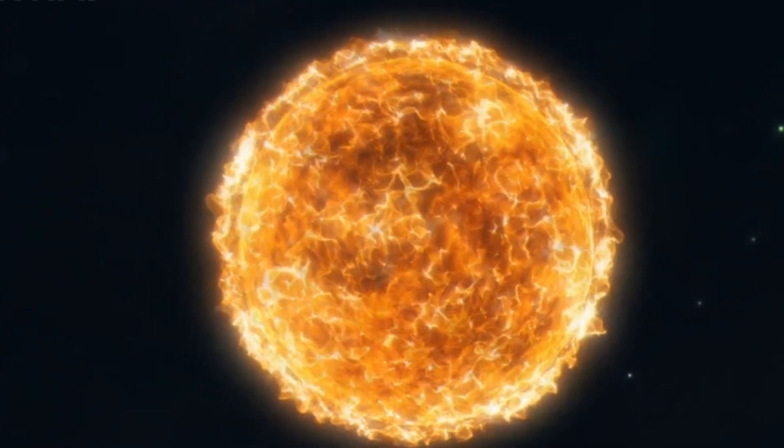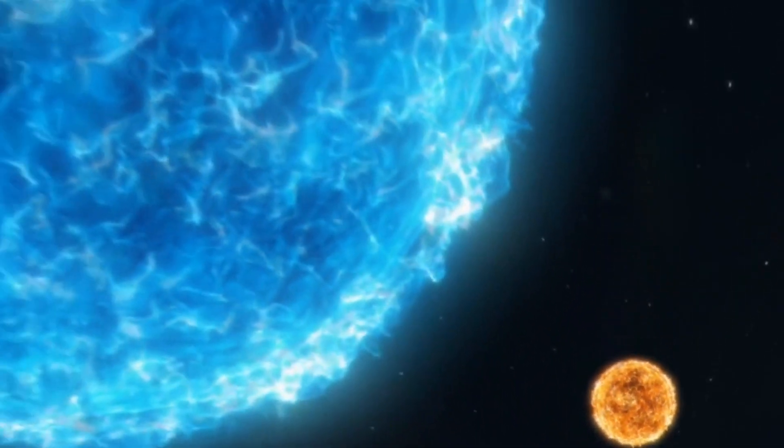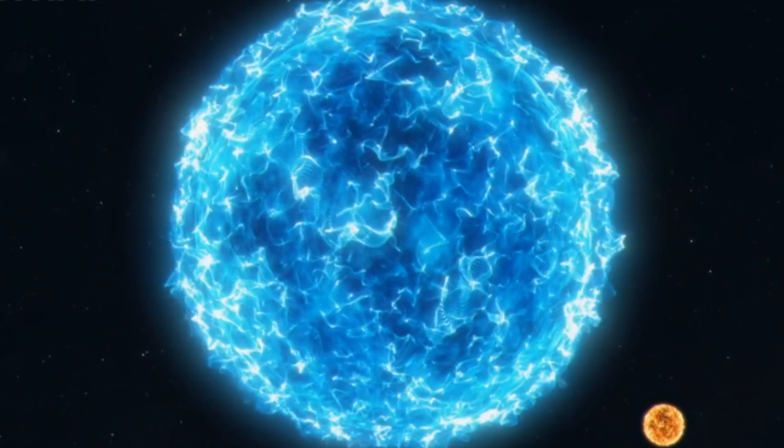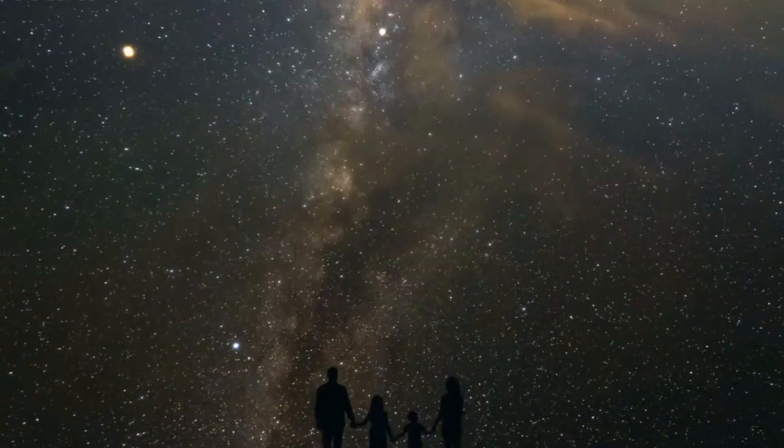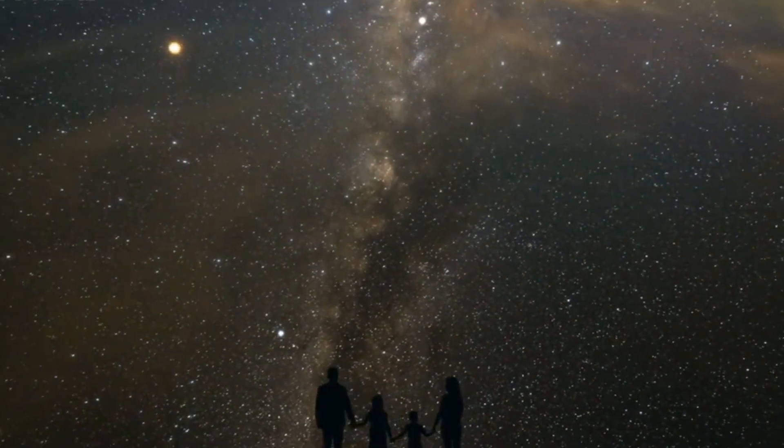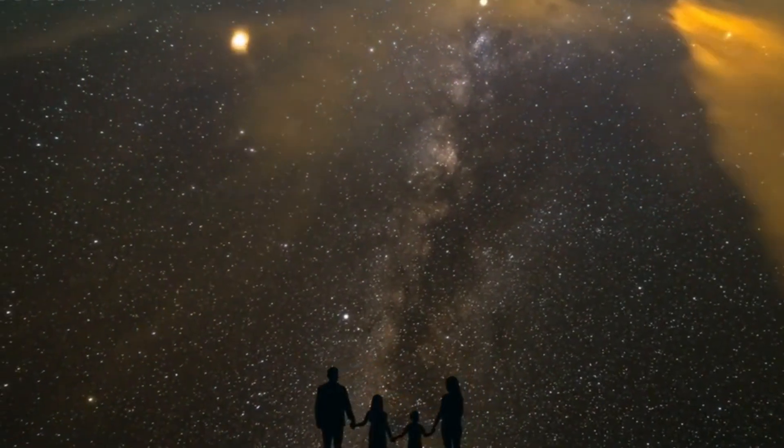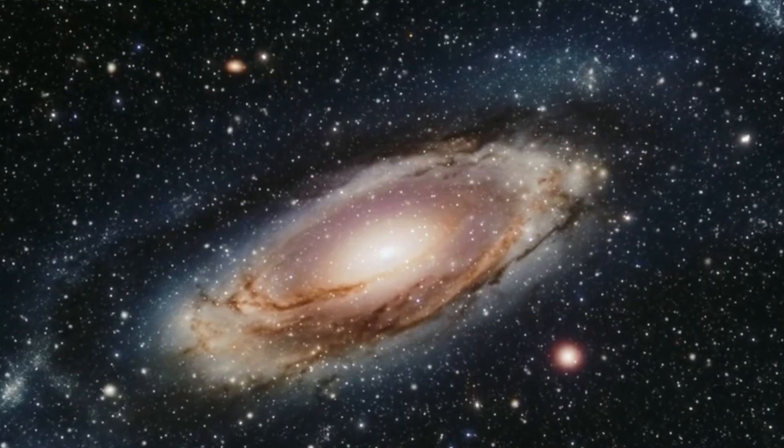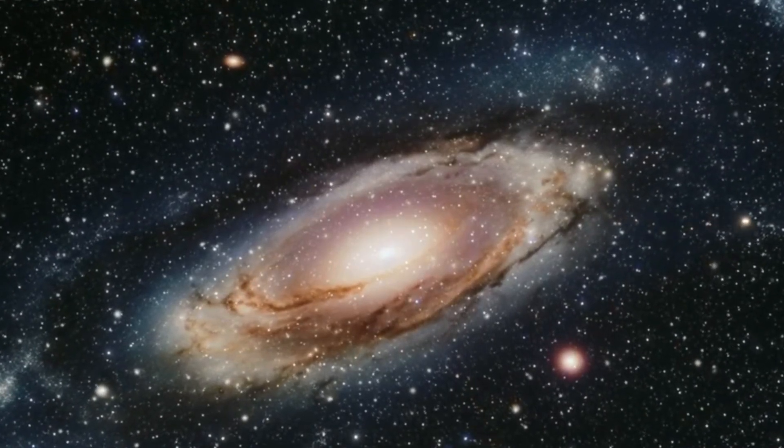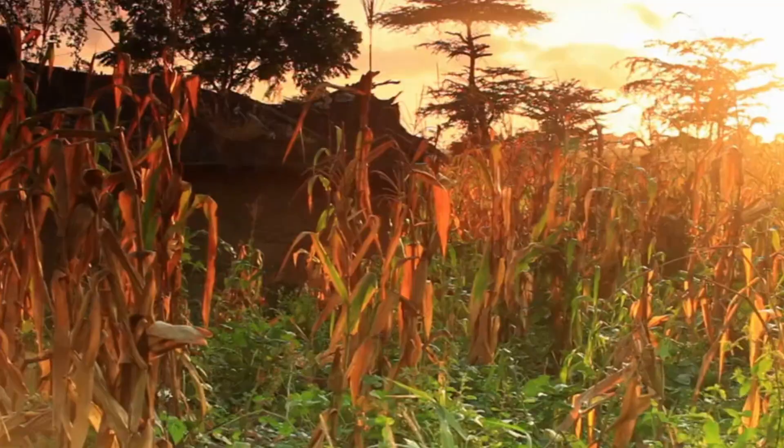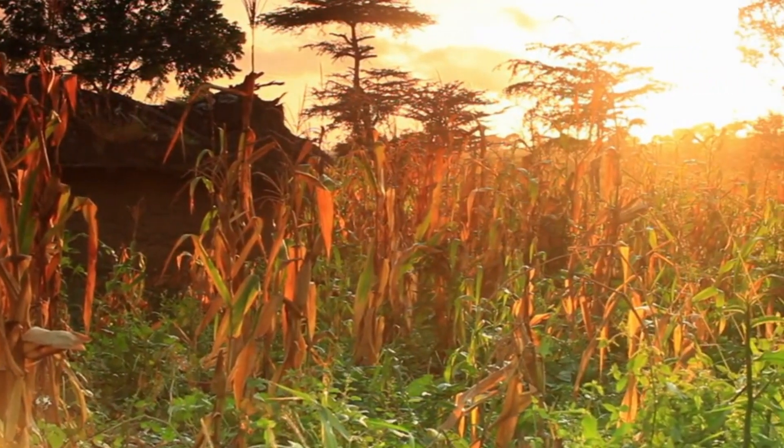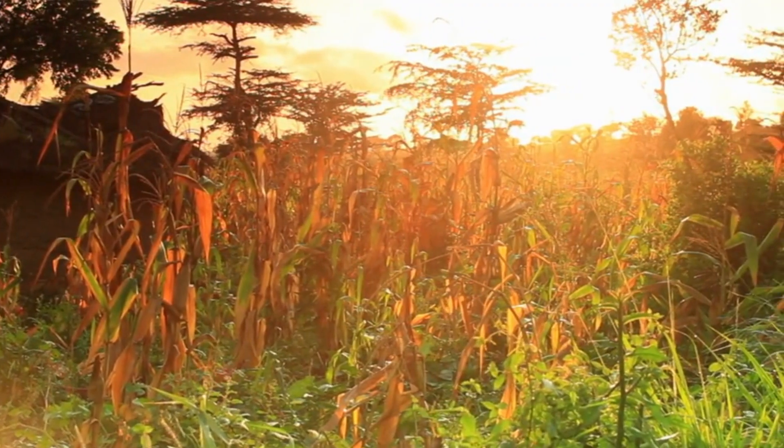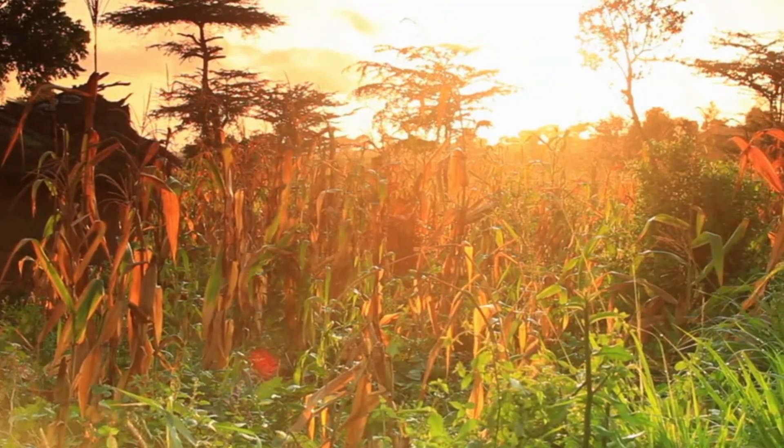Betelgeuse's life is drawing to a close, but unlike smaller stars that burn for billions of years, Betelgeuse is part of a much more intense cycle. It's estimated to be only around 10 million years old, relatively young in stellar terms. However, massive stars like Betelgeuse consume their fuel incredibly fast. Our sun has billions of years left to shine, while Betelgeuse may only have a few hundred thousand at most, and some scientists speculate it could be even less.